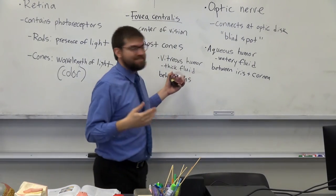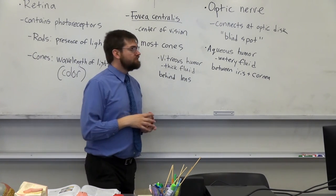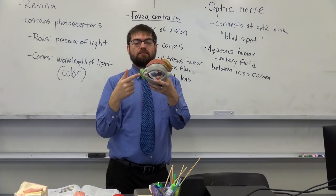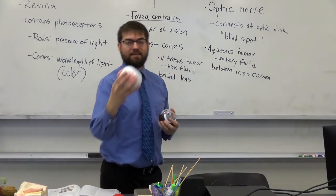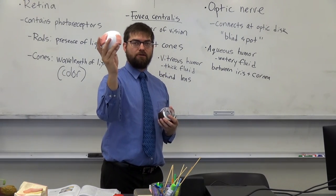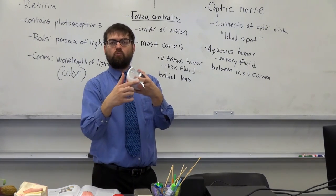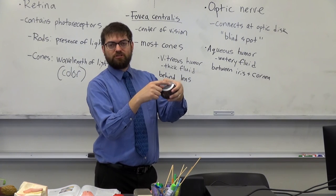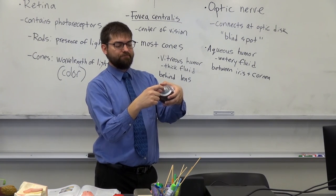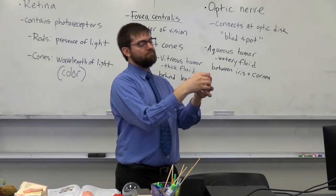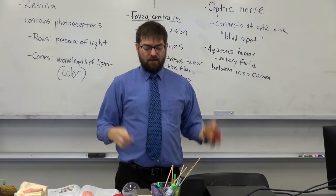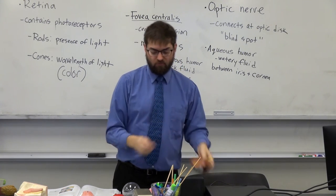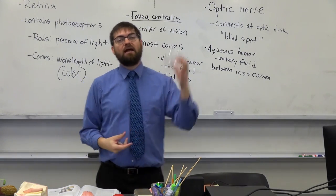To summarize: we have the lacrimal gland and lacrimal ducts, the extrinsic muscles, the sclera (the white part), the cornea (the curved front window), the choroid coat (the brown layer), the iris (the smooth muscle), the pupil (the hole in the iris), the lens held in place by ciliary muscles, the retina at the back, the optic nerve, the aqueous humor at the front, and the vitreous humor behind the lens.